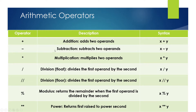You can see on the left: operator, description, and syntax. Plus adds two operands, minus subtracts, asterisk is multiplication, slash is float division, double slash is floor division, modulus returns the remainder, and you can store the result with the assignment operator. Double asterisk is power — for example, if x is 2 and y is 3, then 2 into 2 into 2 equals 8.